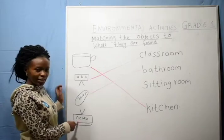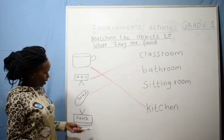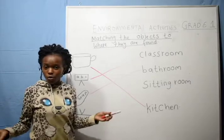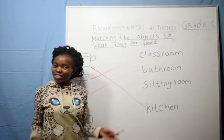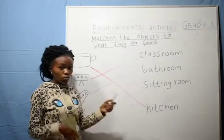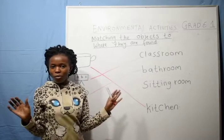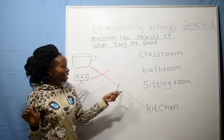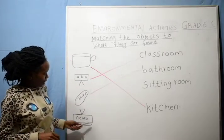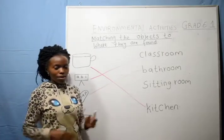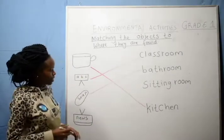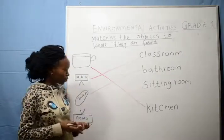So this one is a TV. Do we find a TV in the kitchen? No, we don't find a TV in the kitchen. A TV is found in the sitting room.